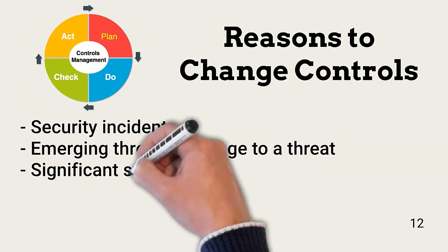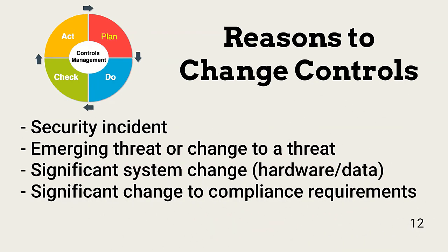In addition to anomalies found in meeting requirements' objectives during controls monitoring or testing, there are other reasons to change controls. For example, the root cause analysis following a security incident might reveal a previously unidentified weakness. A new threat or a change in the behavior of an existing threat might increase risk. A significant change to a system's hardware or associated data might result in an increase or reduction of risk. And finally, laws, industry standards, or internal policies might change, and this might result in new or adjusted compliance challenges.